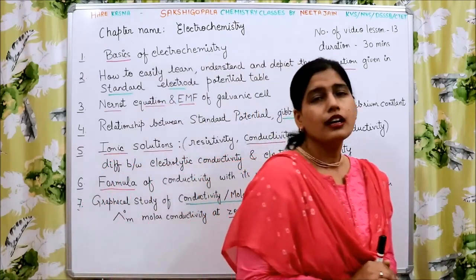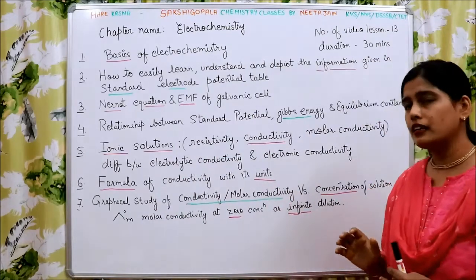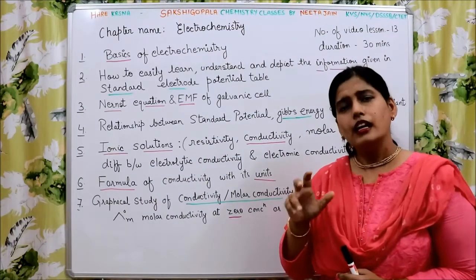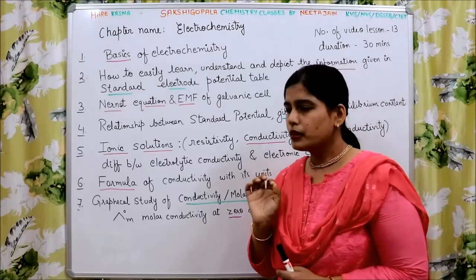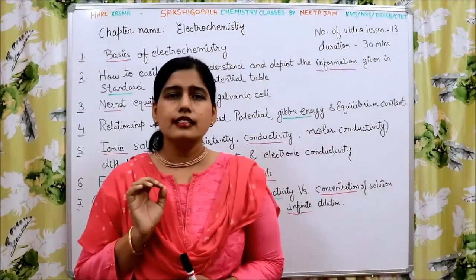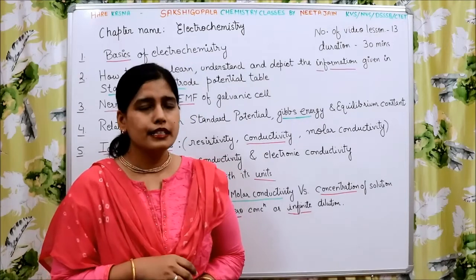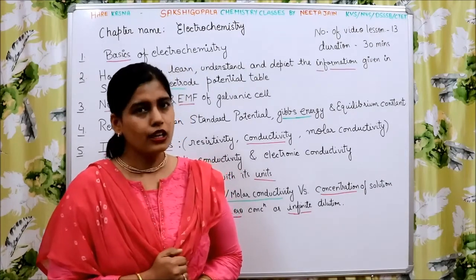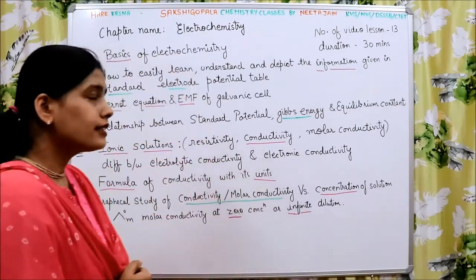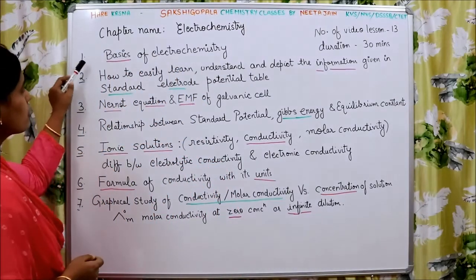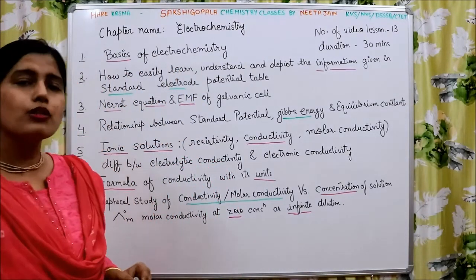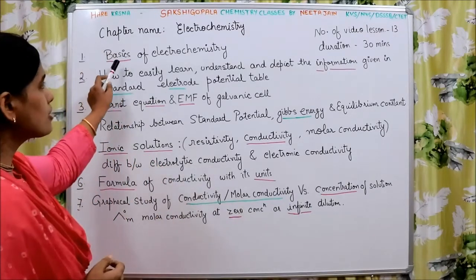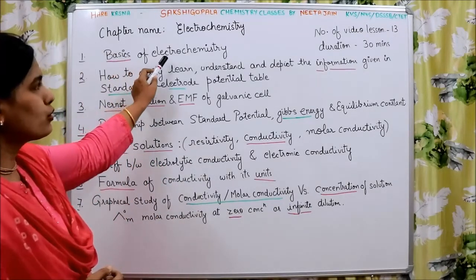We have classified the chapter into a number of video lessons and each video lesson's duration will be 30 minutes. To understand the topic electrochemistry, we have divided it into 13 video lessons, each depicting individual important topics. The very first video lesson we are going to deal with is the basics of electrochemistry.